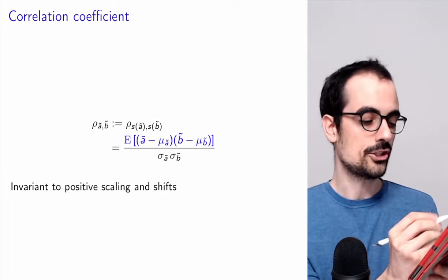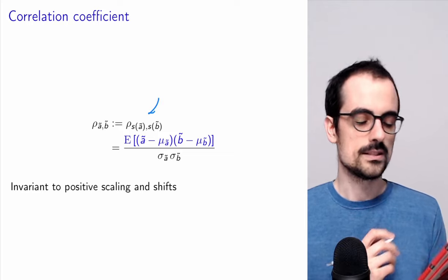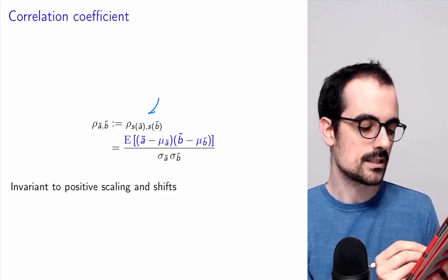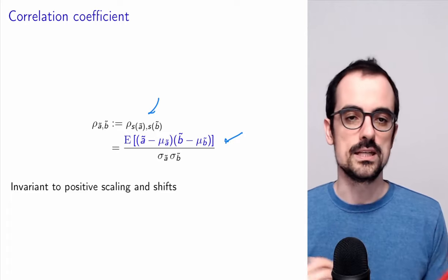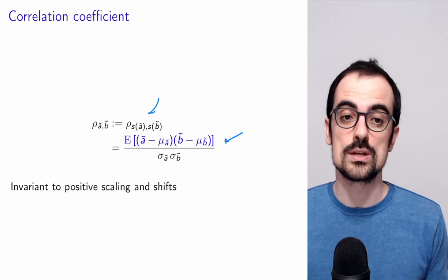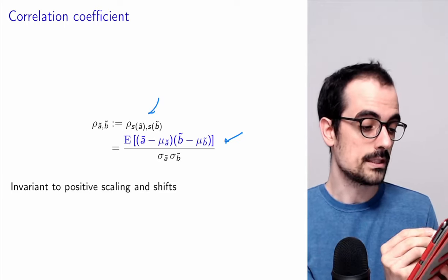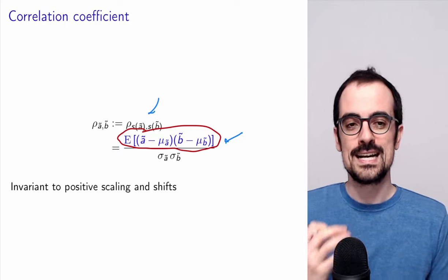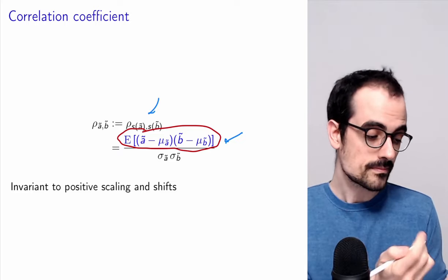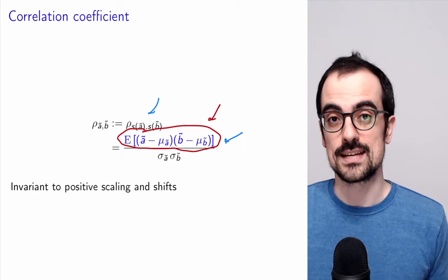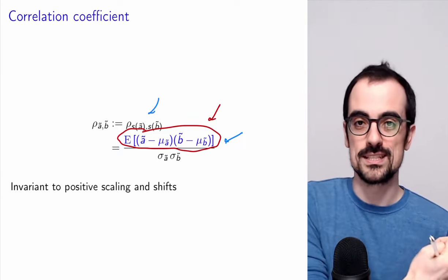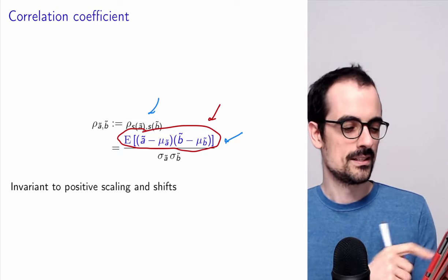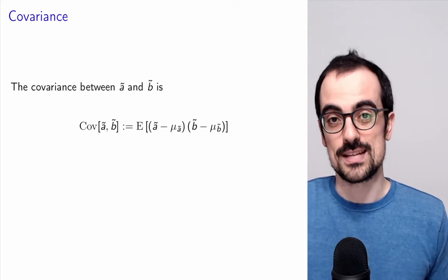Writing out the definition of the correlation coefficient as the mean of the product of the two standardized variables, we get an expression where the numerator is the mean value of the product between the centered random variables divided by the standard deviations. This numerator — the mean of the centered products — is called the covariance of the two random variables. The covariance is proportional to the correlation coefficient: when one is positive, the other is positive; when one is negative, the other is negative; and when one is zero, the other is zero. The covariance captures the linear dependence between two random variables.